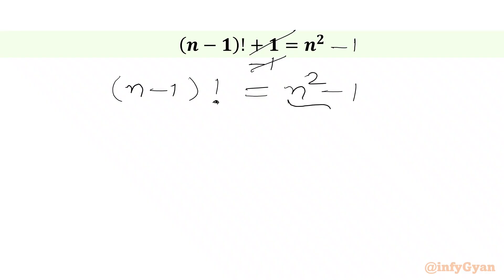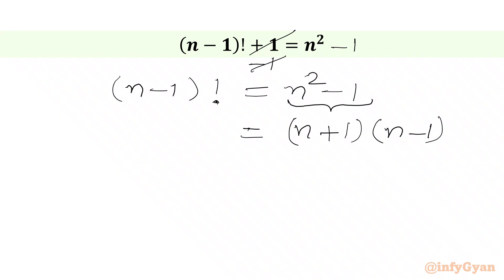Here we will use the difference of two squares formula. So we can write the right hand side as (n plus 1) times (n minus 1). And our left hand side is (n minus 1) factorial.